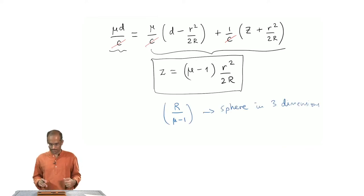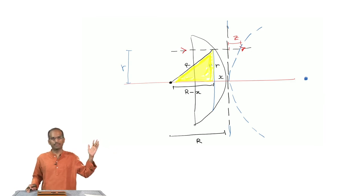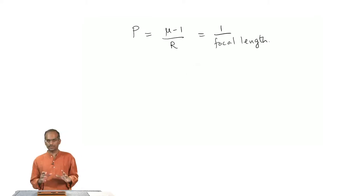The radius is going to be R by mu minus 1. This also means that there is going to be a point of convergence at the centre of that sphere. In other words, if I had an object which is placed at infinity and there is an incoming wavefront which you assume to be a plane wave, it is hitting this plano convex lens. What this analysis tells us is that all the rays would converge at this point whose radius is given by R divided by mu minus 1. So power in this case would simply be mu minus 1 by R, which is equal to 1 by the focal length. This gives us an estimate of power of a lens which is its ability to bend the incoming beam of light.